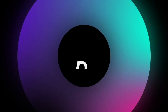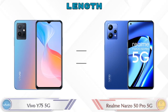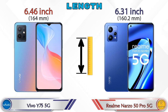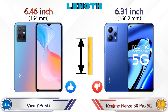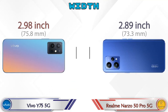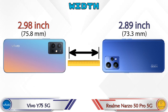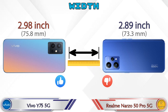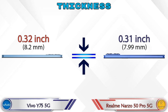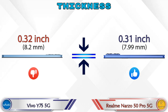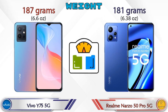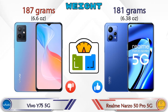Let's check the details about dimensions. Length: the Y75 5G is 6.46 inches and the 50 Pro 5G is 6.31 inches, which is less than the Y75 5G. Width: the Y75 5G is 2.98 inches and the 50 Pro 5G is 2.89 inches, also less. Thickness: the Y75 5G is 0.32 inches and the 50 Pro 5G is 0.31 inches. Weight: the Y75 5G is 187 grams and the 50 Pro 5G is 181 grams.